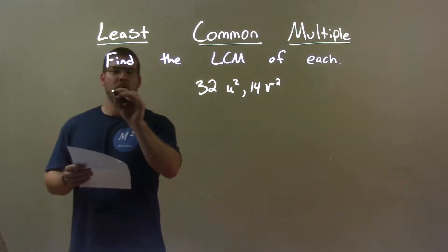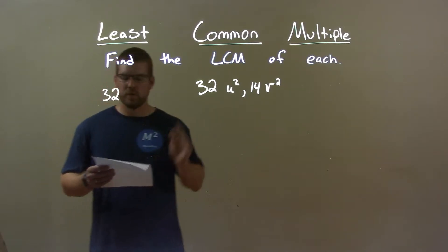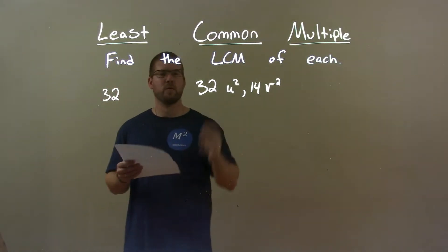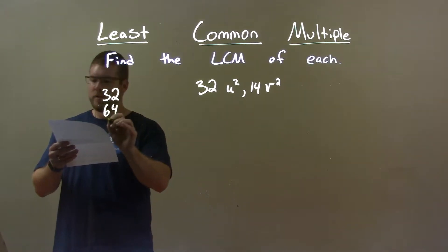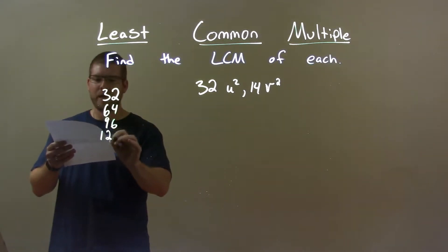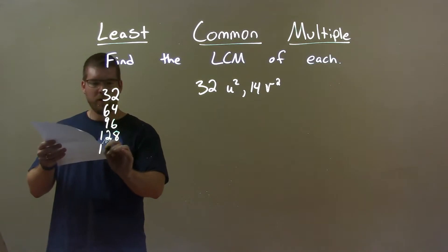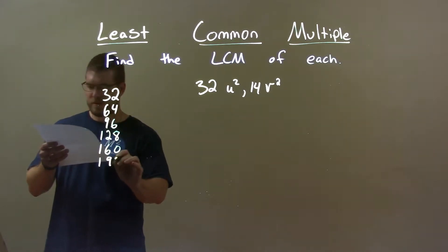32 is the largest of the two. I now go through the multiples of 32 and see which one is divisible by 14. 32 is not, 64 is not, neither is 96, 128 is not, 160, 192 is not.